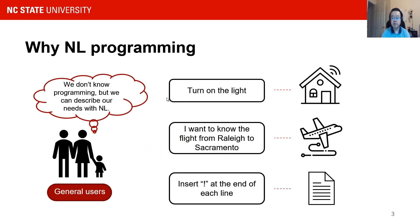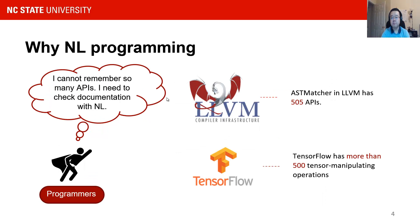Why do we need natural language programming? We can look at the question from two perspectives. From the perspective of general users who have no knowledge about coding, if they want to control a device of a smart home such as turn on the light, or they want to get some information of a flight, the most convenient way is to speak their needs to a virtual assistant with natural language. From a professional programmer's perspective, in many popular programming languages or tools, there are a large number of APIs, which is hard for programmers to remember them all with details.